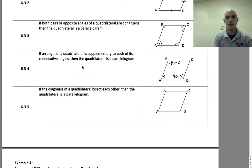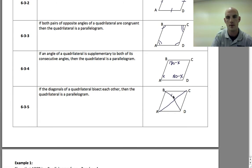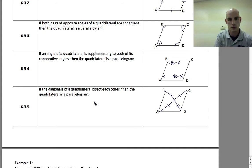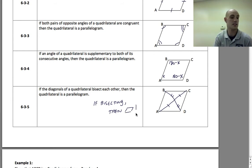Last theorem: If the diagonals of a quadrilateral bisect one another, then the quadrilateral is a parallelogram. We don't know if it's a parallelogram, but if bisecting is true, then it is a parallelogram.